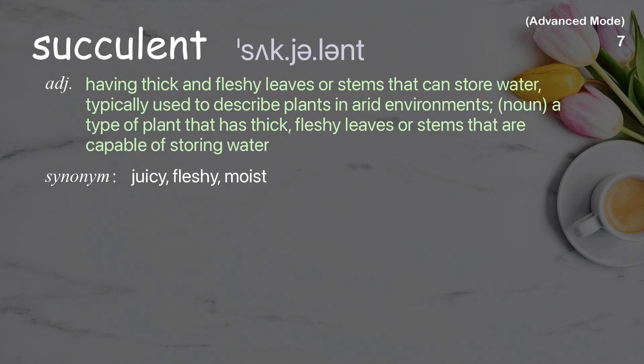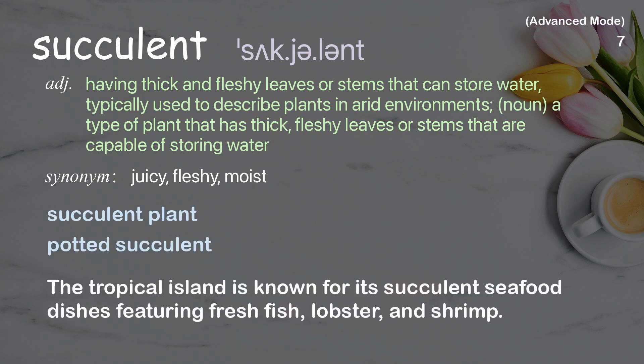Succulent: Having thick and fleshy leaves or stems that can store water, typically used to describe plants in arid environments. As a noun, a type of plant that has thick, fleshy leaves or stems capable of storing water. Examples: Potted succulent. The tropical island is known for its succulent seafood dishes, featuring fresh fish, lobster, and shrimp.